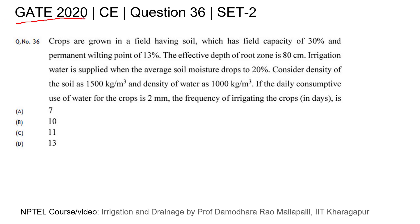GATE 2020 Civil Engineering Question Number 36, Set 2. Crops are grown in a field having soil with field capacity of 30 percent and permanent wilting point of 13 percent. The effective depth of root zone is 80 centimeter. Irrigation water is supplied when the average soil moisture drops to 20 percent. Consider density of soil as 1500 kg per meter cube.